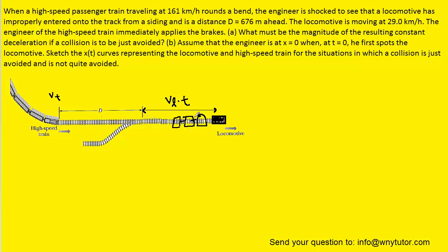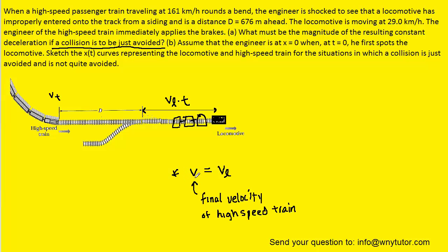The key idea is that if a collision is to be just avoided, the final velocity of the high-speed train has to equal the velocity of the locomotive. If the velocity of the train were larger than the locomotive's, it would collide. If the velocity was much less, there would be no collision at all. We're trying to just avoid the collision, so the final velocity of the train must equal VL.